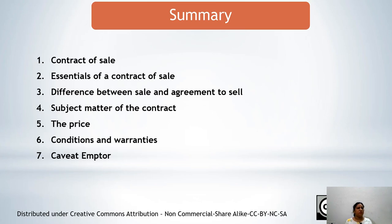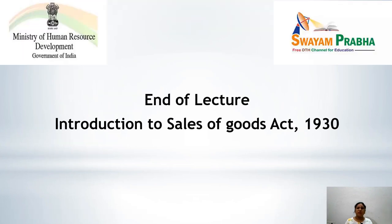So we have come to the end of this topic. In this lecture, we have covered the contract of sale and its various essentials — that there must be goods, there must be price, there must be two parties. We discussed the difference between sale and agreement to sell, the subject matter of the contract including future goods, existing goods, and contingent goods, the price and modes of fixing the price, conditions and warranties and their meanings, implied conditions, implied warranties, and finally caveat emptor which means let the buyer beware. This is the end of the lecture on introduction to the Sales of Goods Act 1930. Thank you.